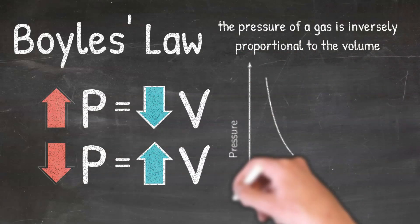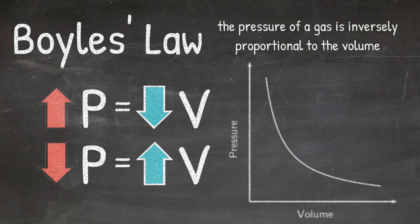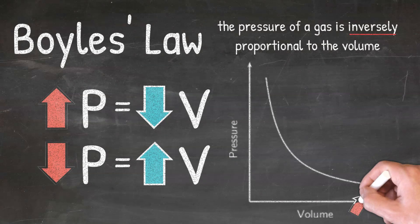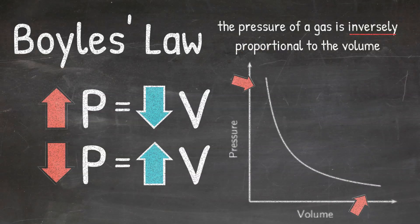We can also represent Boyle's Law using a graph where we would graph the pressure and the volume. It is important to remember that Boyle's Law tells us that the pressure and volume are inversely related. As you can see here, this graph has a negative slope. You can see that at low pressures the volume is high, and at high pressures the volume is low, again showing the inverse relationship between pressure and volume at a constant temperature.